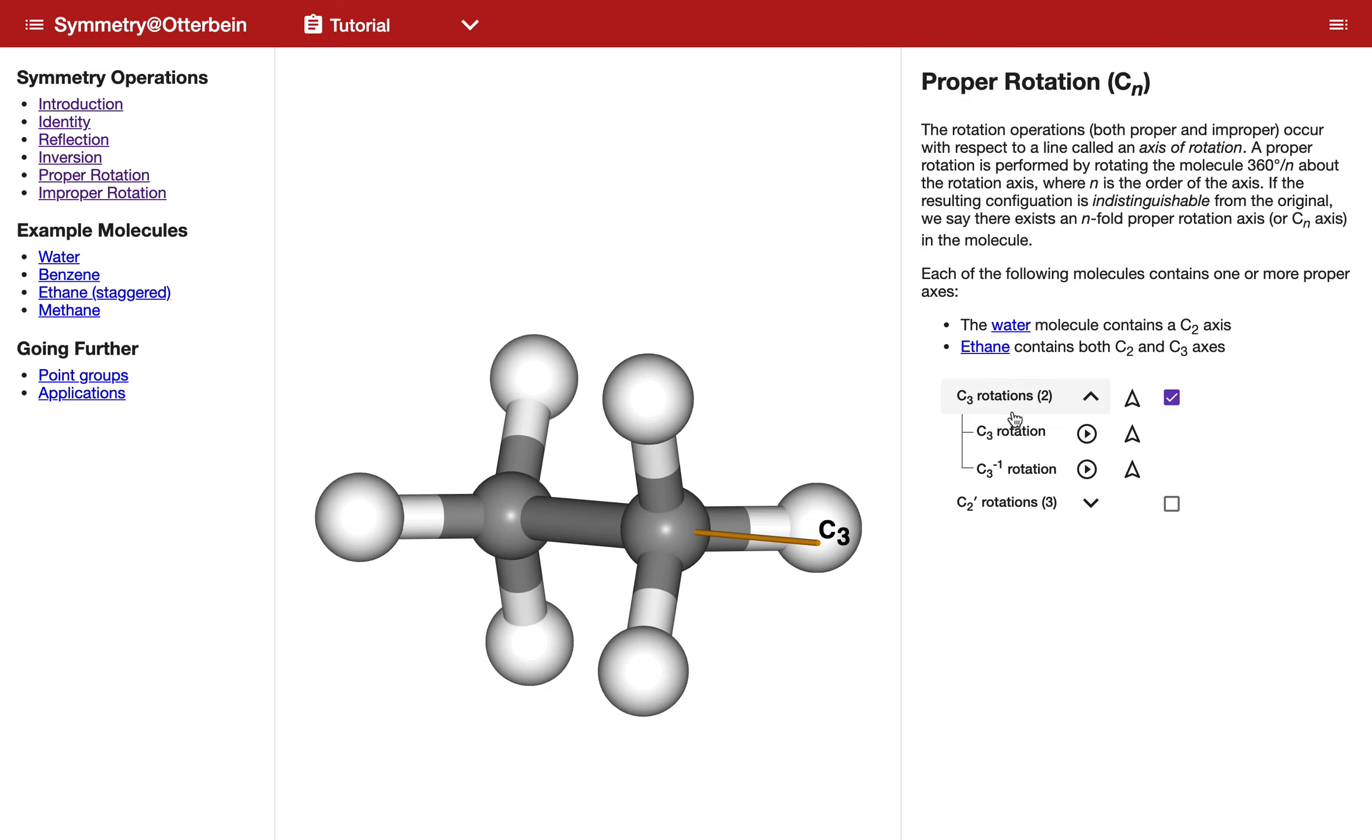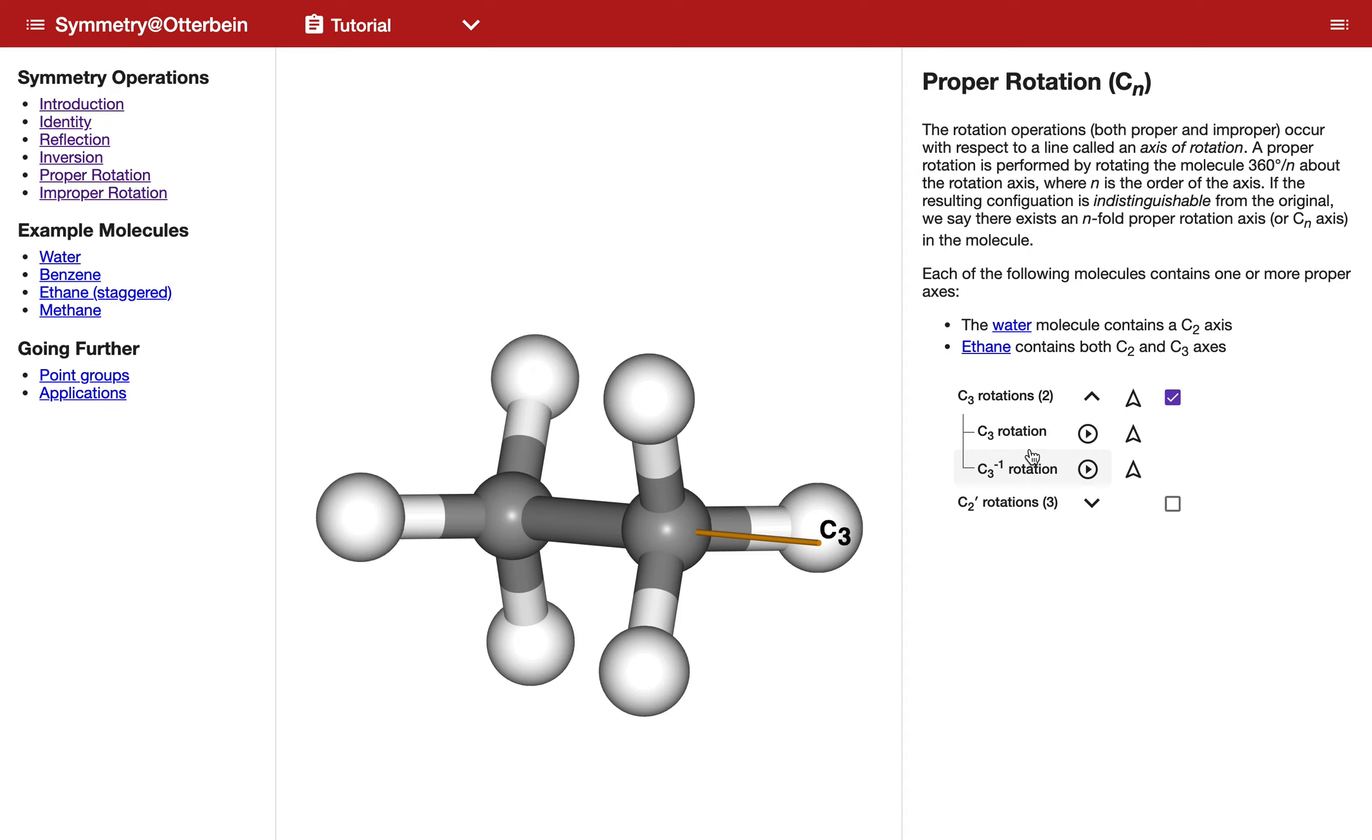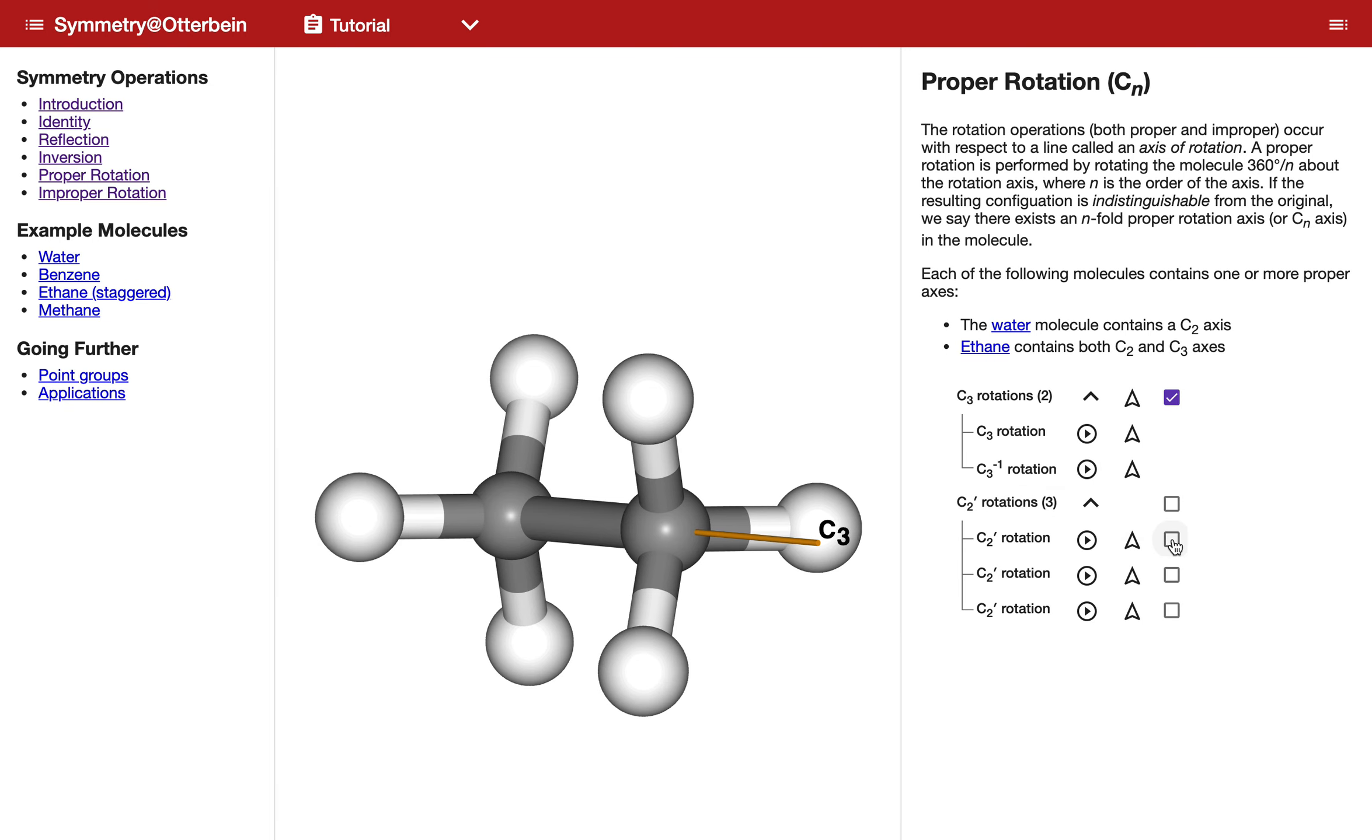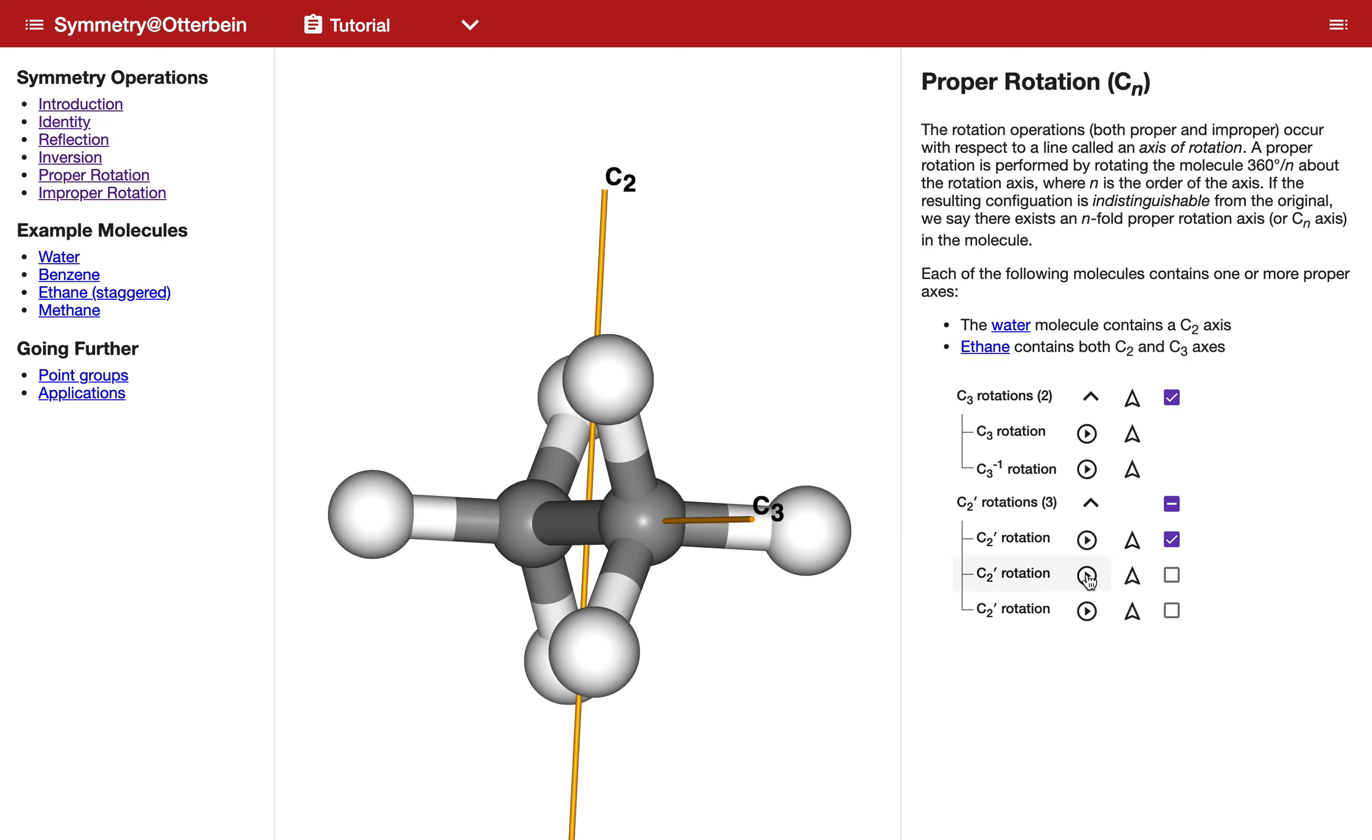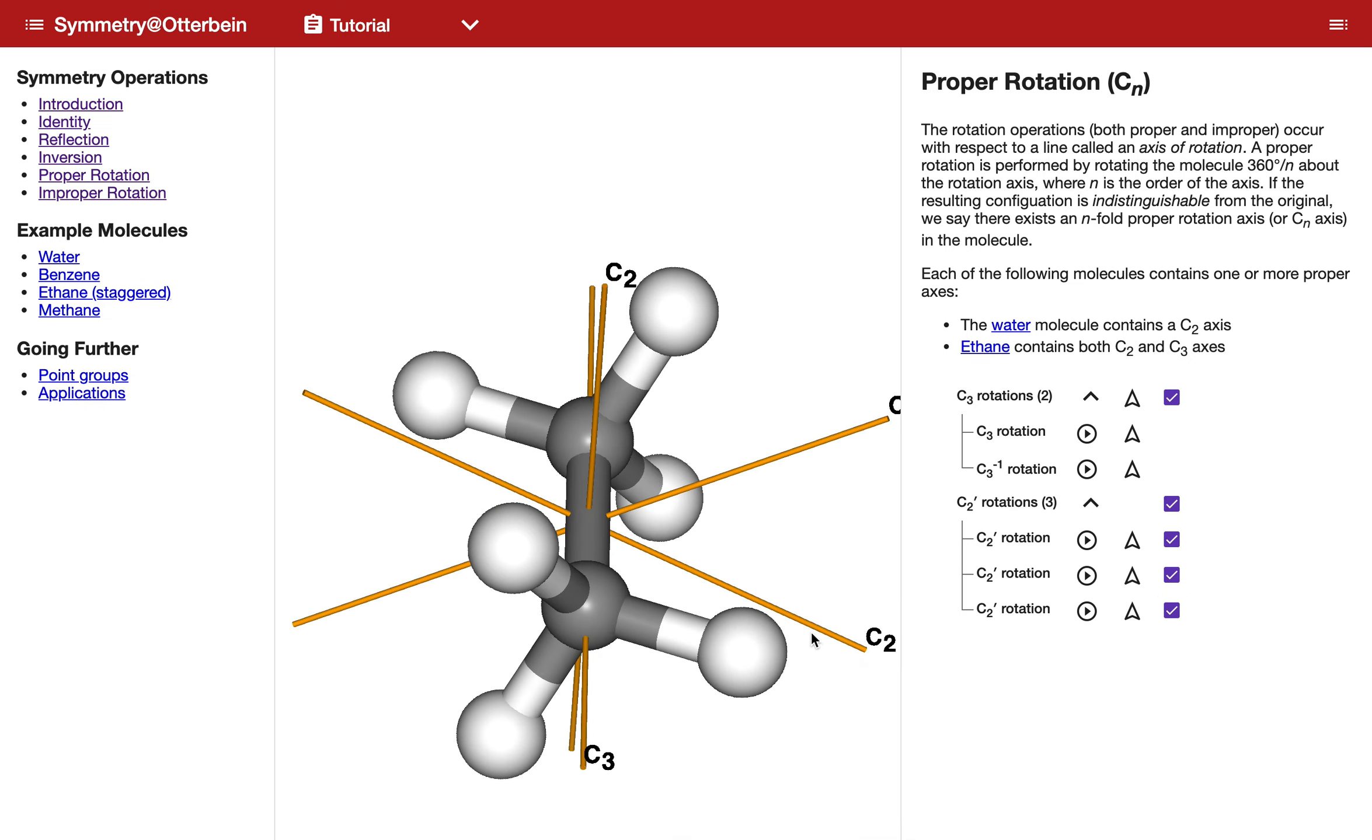We're going to talk a little bit more about how different elements can support more than one operation. Now what about these C2 rotations? If I were to open this up and look at each of these C2 axes, you'll see that it comes down and bisects the carbon-carbon bond. And each of these does.